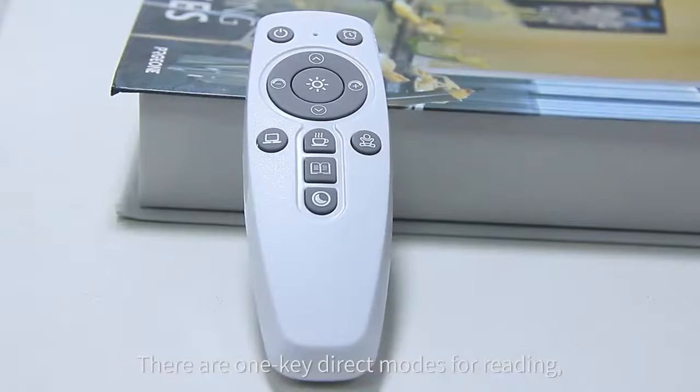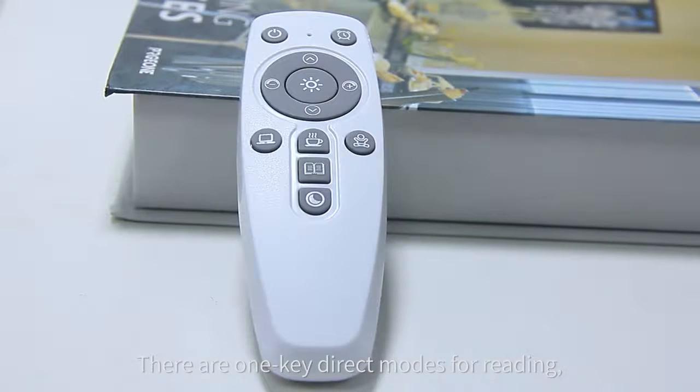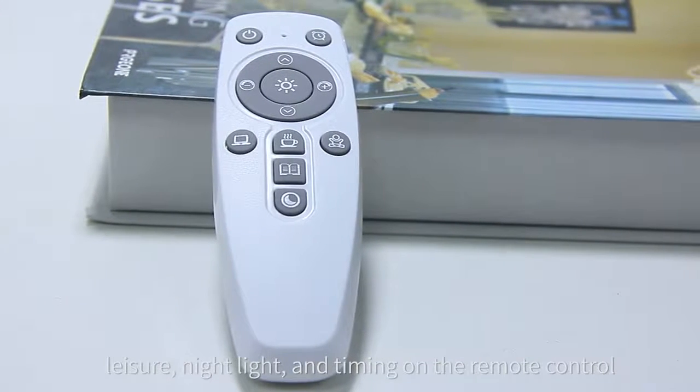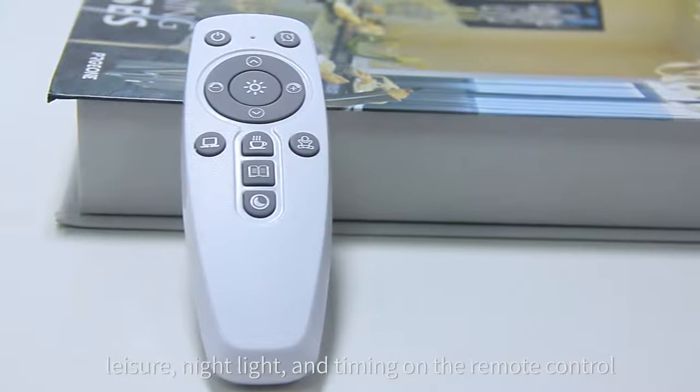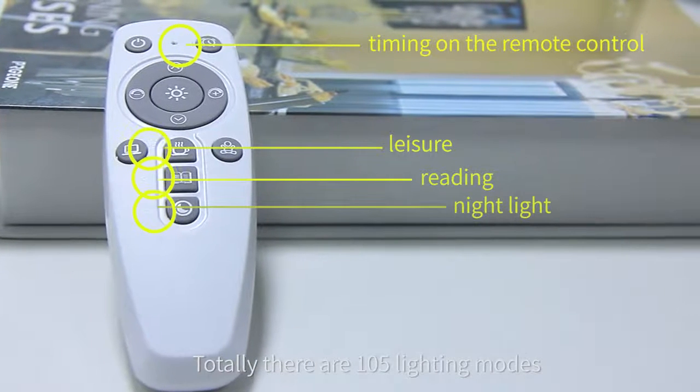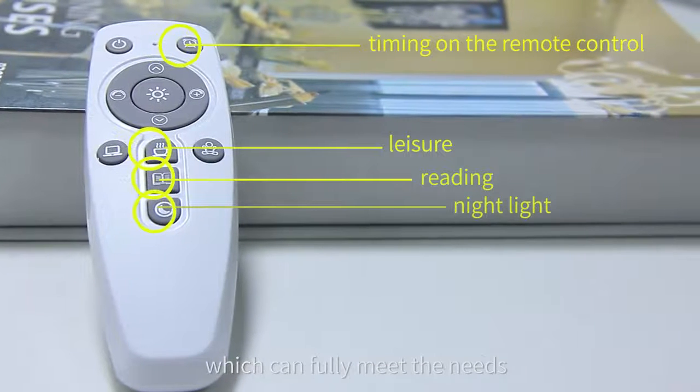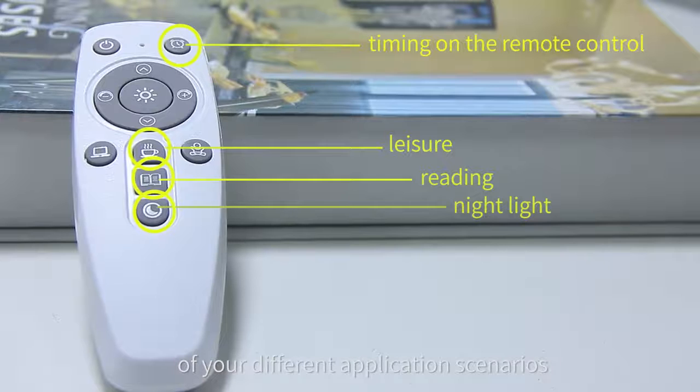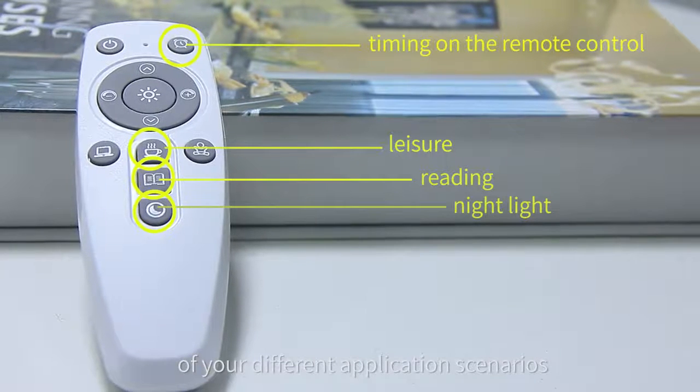There are one-key preset modes for reading, leisure, night light, and timing on the remote control. Totally, there are 105 lighting modes, which can fully meet the needs of your different application scenarios.